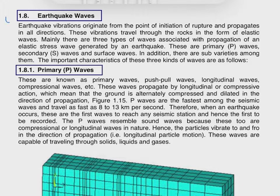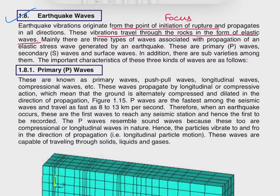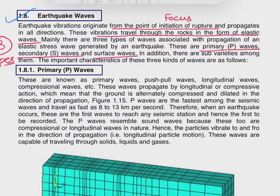Today we discuss these elastic stress waves, titled as earthquake waves. Earthquake vibrations originate from the point of initiation of rupture, called the focus or hypocenter, and propagate in all directions. These vibrations travel through rocks in the form of elastic waves. There are mainly three types of waves generated by an earthquake: primary P-waves, secondary S-waves, and surface waves.